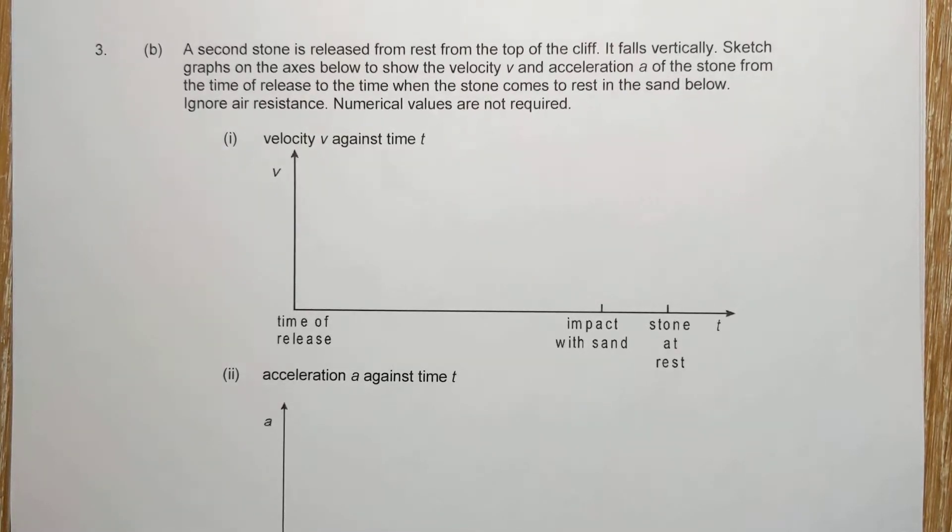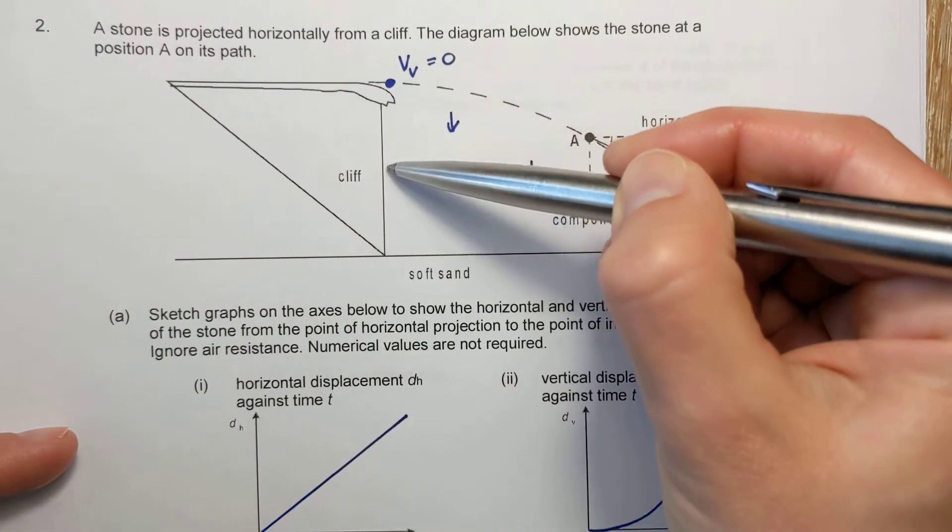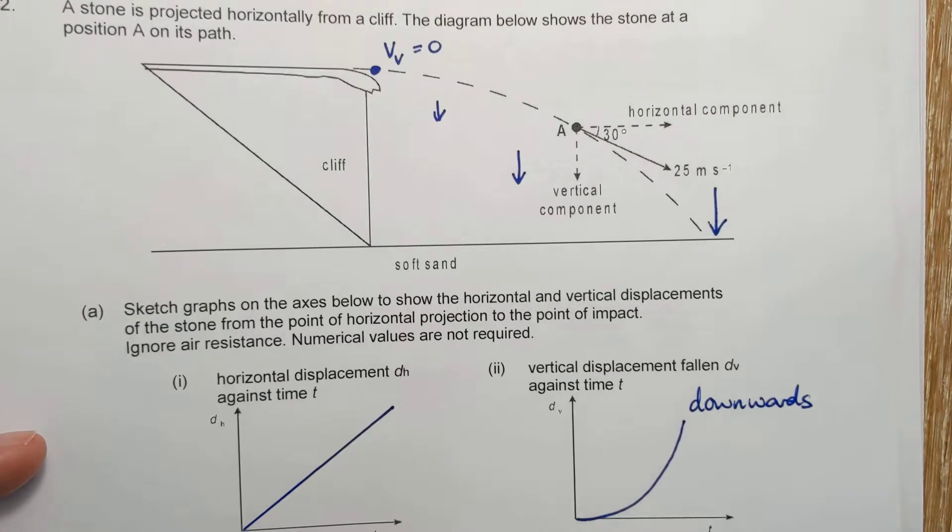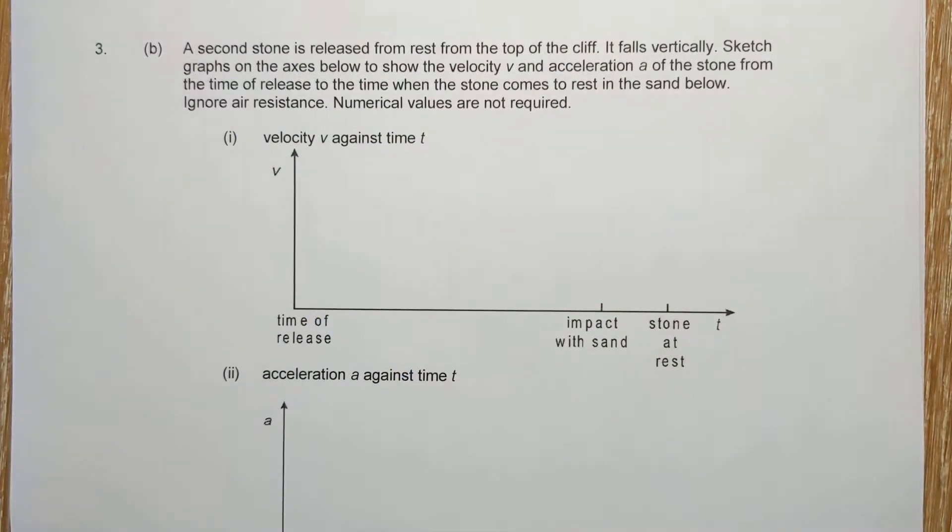Our question three follows on from the previous question, but this time we're just dropping the stone and it falls vertically downwards and hits the sand. If you'd like to have a go at plotting the velocity and acceleration, pause the video now.